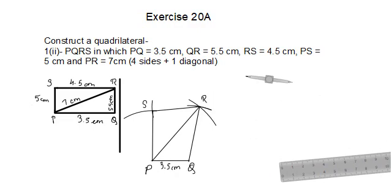It's very important to do the labeling, so don't forget that. PS is of 5 centimeters, PR is of 7 centimeters, SR is of 4.5 centimeters, and QR is of 5.5 centimeters. Our final figure is also done. Friends, this is all for today. If you are new to my YouTube channel, do not forget to subscribe and leave a like. Till then, take good care of yourselves — bye bye.